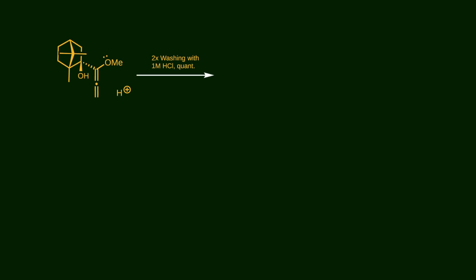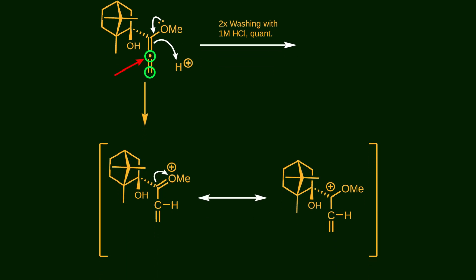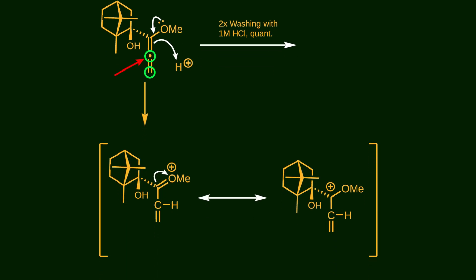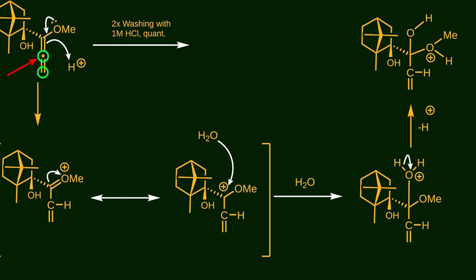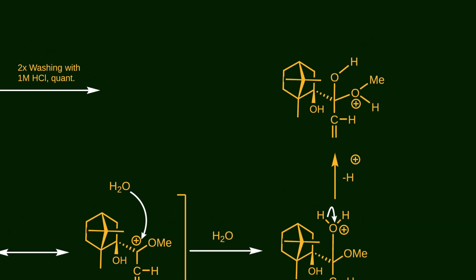In the next step, this intermediate reacts with HCl. There are two carbon atoms that can potentially be protonated. But thanks to the nonbonding electrons on the methoxyallene group, this one is more reactive. As a result, a carbocationic center is formed, setting the stage for a nucleophilic attack by water, which leads to the formation of a tetrahedral intermediate.